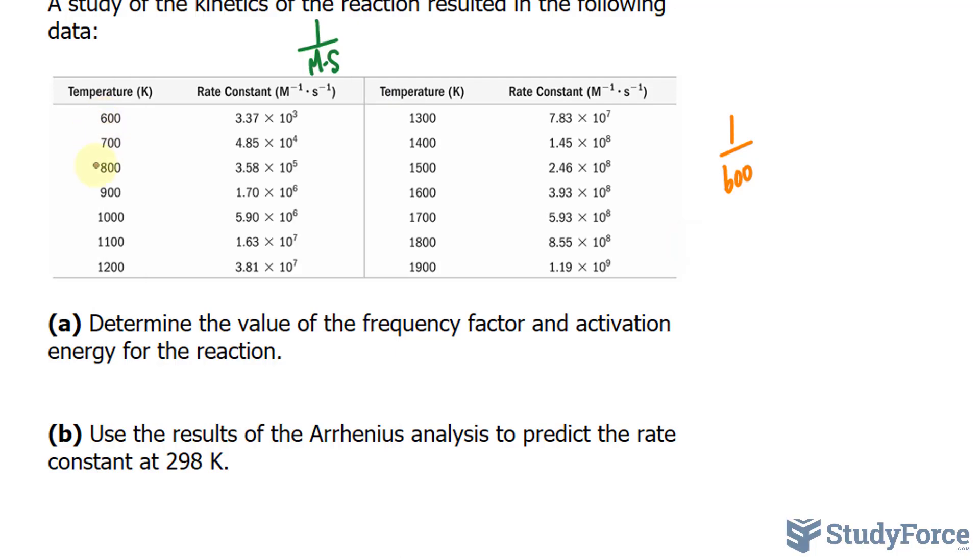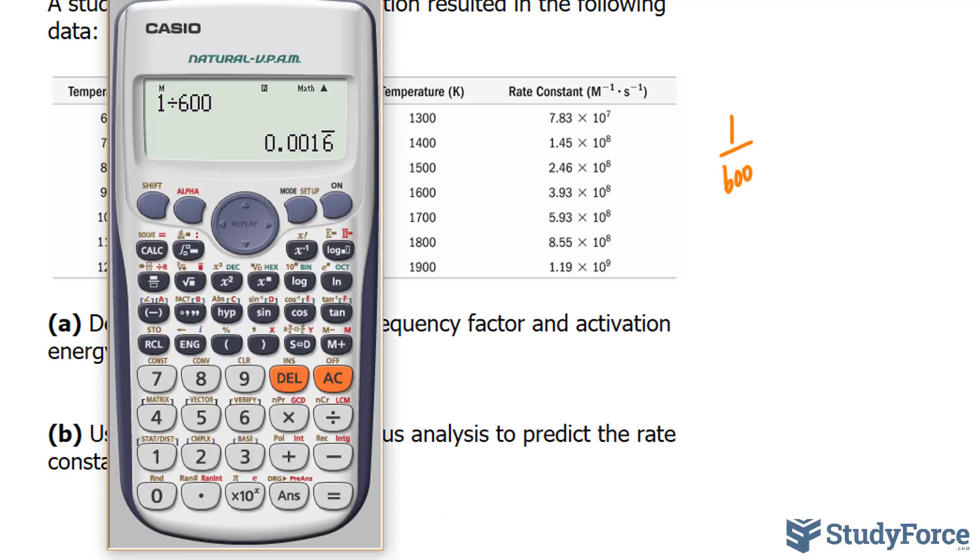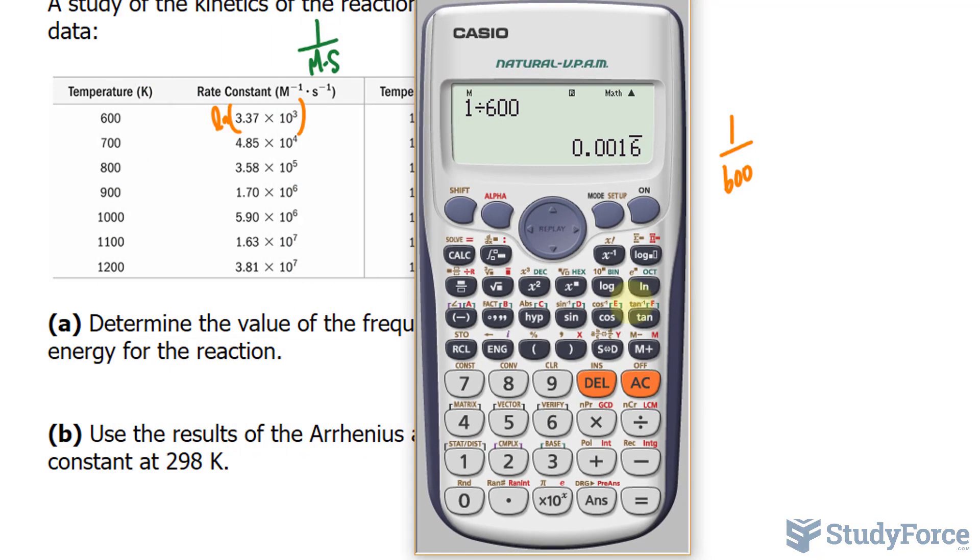But for the rate constant, you'll take the ln of those numbers. So you ln each of these and you use the function on your calculator. For example, ln of 3.37 times 10 raised to the power of 3. So rather than using 3.37 times 10 to the power of 3, you use 8.1226, for example. Once you've done that, you should actually end up with a linear equation, which is what you would expect for an Arrhenius plot.